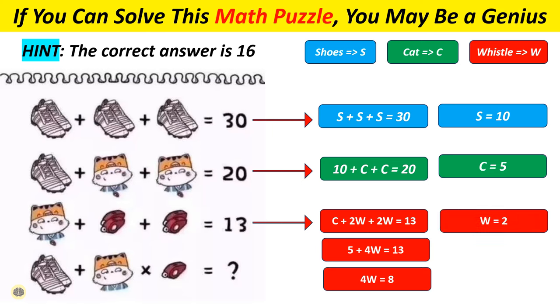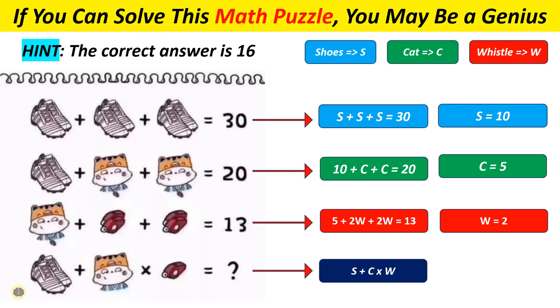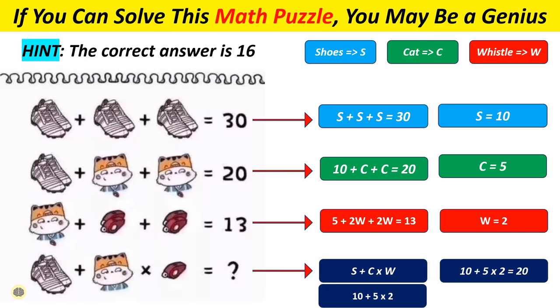Okay. So that clears up a bit of the next equation until you plug the numbers in. Substitute S plus C times W for 10 plus 5 times 2. Remember your order of operations. Multiply first and then add. So 10 plus 10 equals 20. So what went wrong?